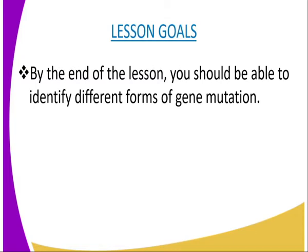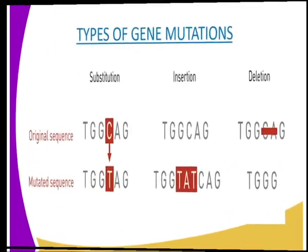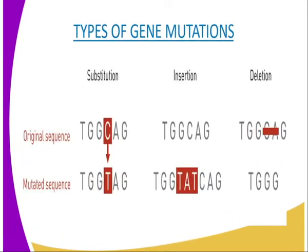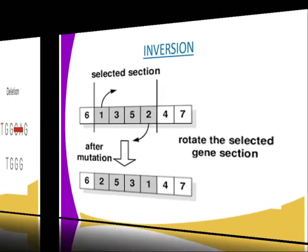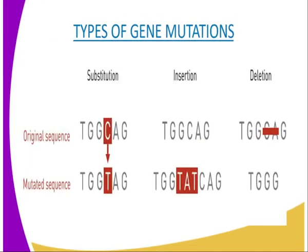There are four main types of gene mutation, which include insertion, substitution, inversion, and deletion. Our diagrammatic representation on the screen shows all those types of gene mutations. According to our diagram, we have the original sequence shown in uppercase and the mutated sequence shown in lowercase.